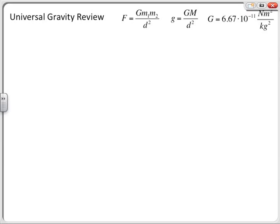I'll be using the two equations that you can see up here. First, we can describe any force felt between two objects because of gravity with this equation, where we have the mass of the two objects m1 and m2, and we have their distance of separation squared in the denominator. Then we also multiply by the universal gravitational constant, which is 6.67 times 10 to the minus 11 newton meters squared per kilogram squared.